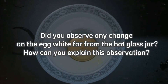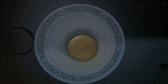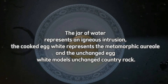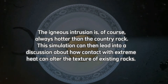Second question: Did you observe any change on the egg white far from the hot glass jar? How can you explain this observation? The jar of water represents an igneous intrusion. The cooked egg white represents the metamorphic aureole, and the unchanged egg white models unchanged country rock. The igneous intrusion is always hotter than the country rock. This simulation can then lead into discussion about how contact with extreme heat can alter the texture of existing rocks.